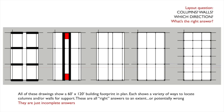So here I've drawn five different plans. Each one of these plans is a 60 foot by 120 foot footprint, and they show a variety of ways to locate columns or walls within these footprints. We can make all of these work structurally, so in other words they're all right. But the thing is, what if they're all wrong to a certain extent?